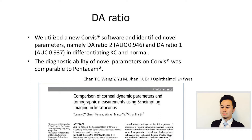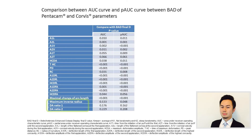We also found that the diagnostic ability of these novel Corvis parameters was comparable to the Pentacam BAD. In this table, you can see there is no significant difference between these novel Corvis parameters and the BAD in discriminating keratoconus from normal cornea.